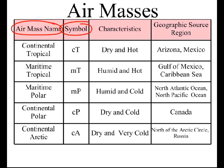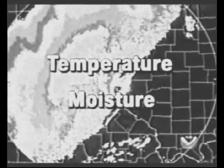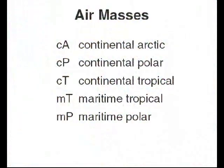What you do need to know is what are the characteristics for those different types of air masses. Meteorologists say air masses are distinguished by two major characteristics: their temperature and their moisture or humidity.